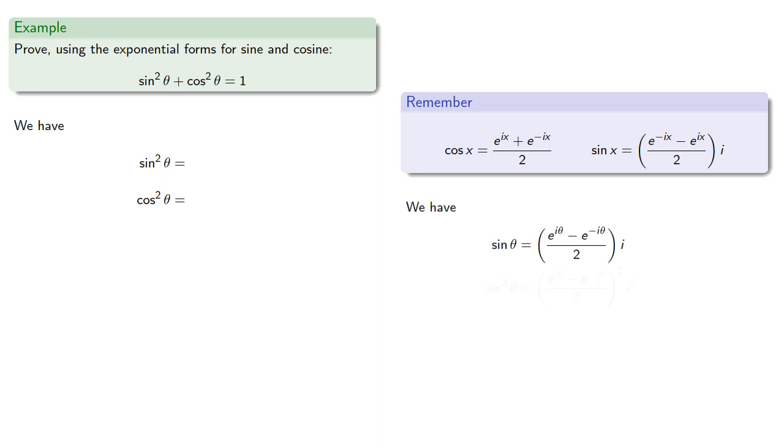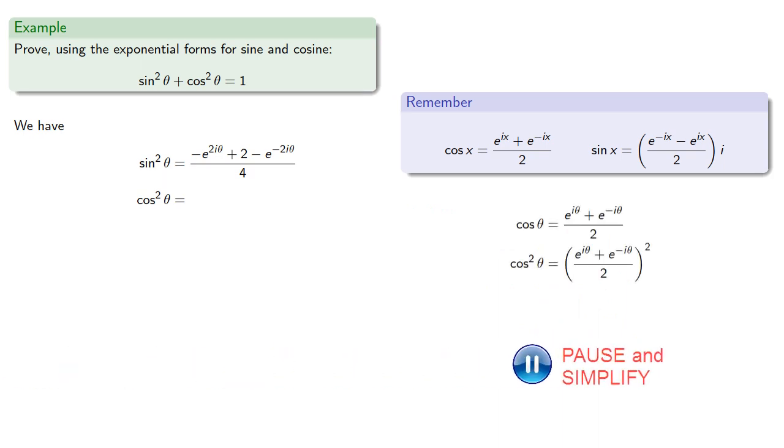So from the exponential form of sine theta we find... And from the exponential form of cosine theta we find... So when we add sine squared plus cosine squared we get...